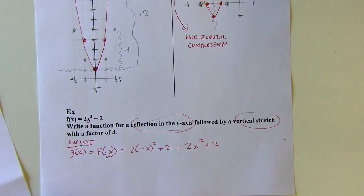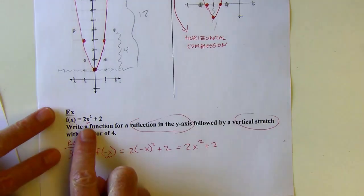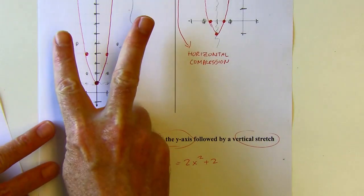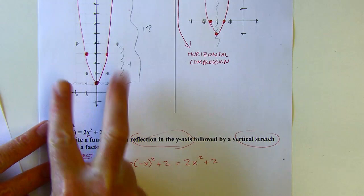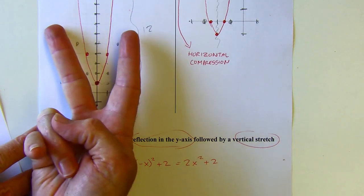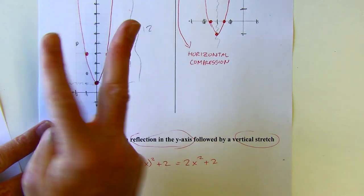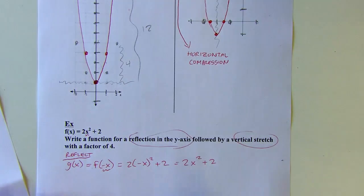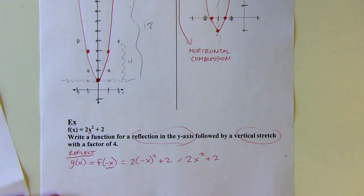The reason I end up with the same expression is because this parabola is centered on the y-axis, just like the original. When I reflect over the y-axis, it flips but looks exactly the same because it's already centered on the y-axis. So I've done my reflection.